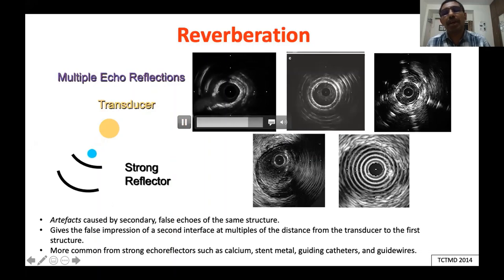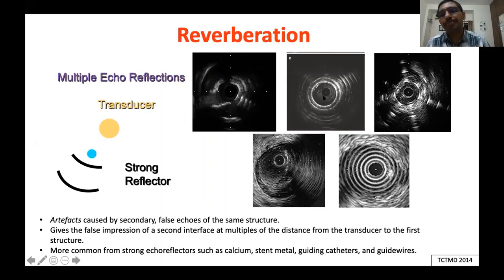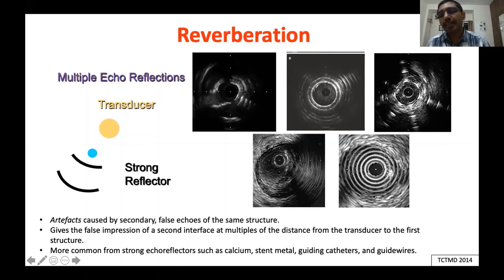Reverberations are more commonly seen with calcium — when you do rotational atherectomy it palates calcium, making reverberation more prominent. The guide catheter also produces prominent reverberation. Here is guide catheter-related reverberation, here is stent strut-related reverberation — you can see multiple layers of stents but actually there is only one layer, all the rest are artifacts. And here is guide wire-related reverberation and air bubble-related reverberation.